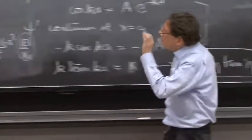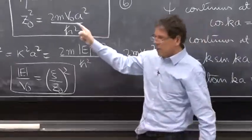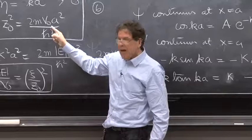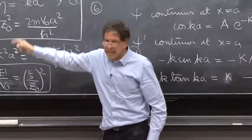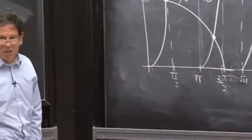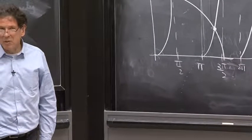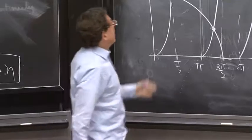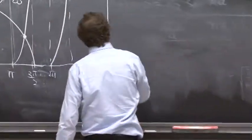Interestingly, however shallow this potential might be, however small z₀, the circle will always have one intersection. So there will always be at least one solution. That's the end of that story.